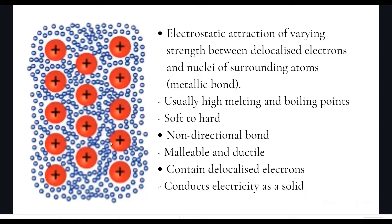The metallic bond is usually strong. This means it requires a high amount of energy to overcome the electrostatic attraction between the atoms' nuclei and delocalized electrons. Therefore, most metallic solids have a high melting and boiling point, ranging from the high hundreds to the thousands. Metallic solids do have a range of boiling points, though, because the strength of the metallic bond varies depending on how many delocalized electrons the atoms have and how many protons they have.